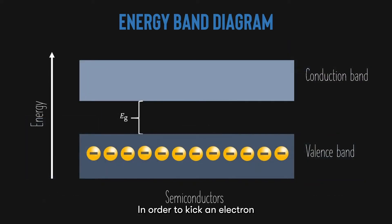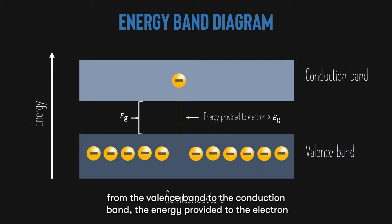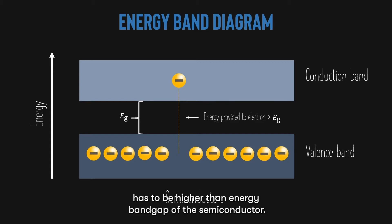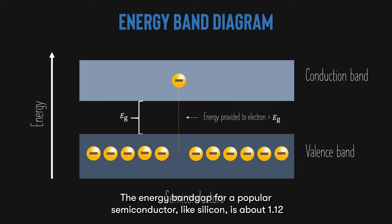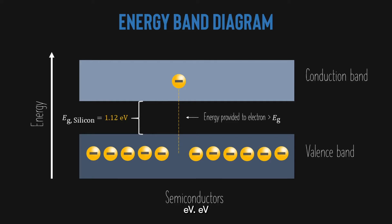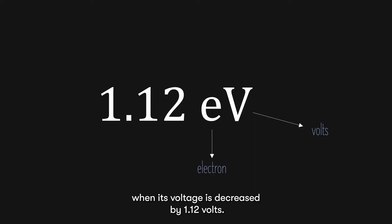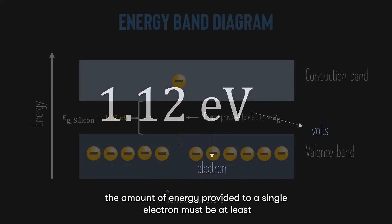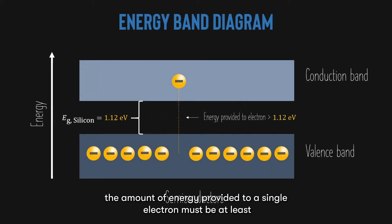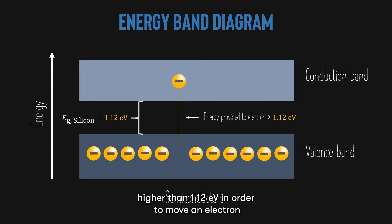In order to kick an electron from the valence band to the conduction band, the energy provided to the electron has to be higher than the energy band gap of the semiconductor. The energy band gap for a popular semiconductor like silicon is about 1.12 electron volts. Electron volts is the unit of energy commonly used to describe the energy of an electron — 1.12 electron volts is the amount of energy gained by an electron when its voltage is decreased by 1.12 volts. So for silicon, the amount of energy provided to a single electron must be at least higher than 1.12 electron volts in order to move it up from the valence band to the conduction band.